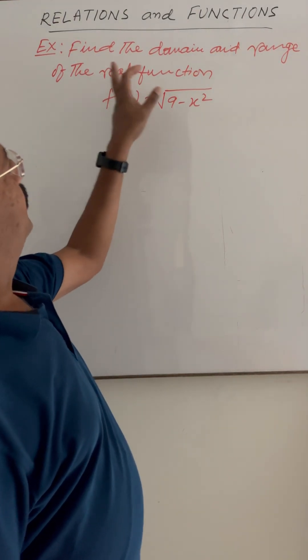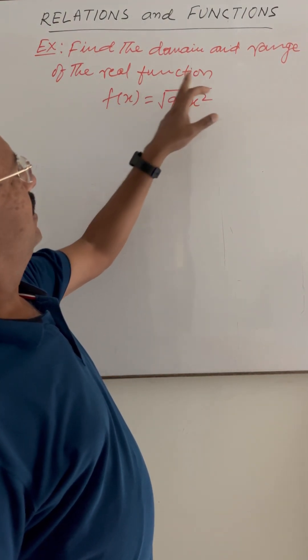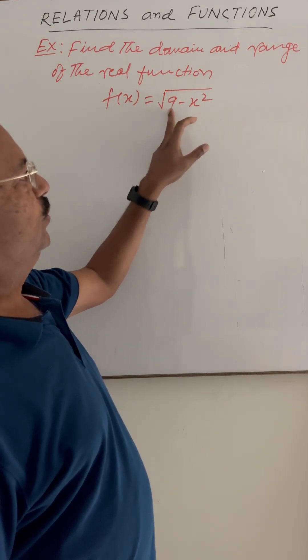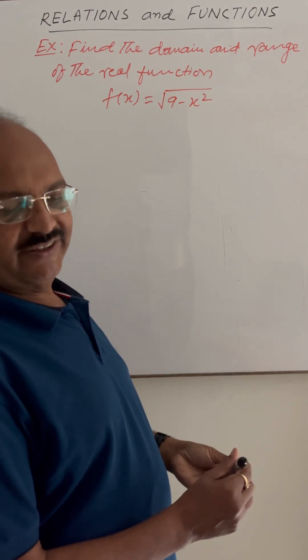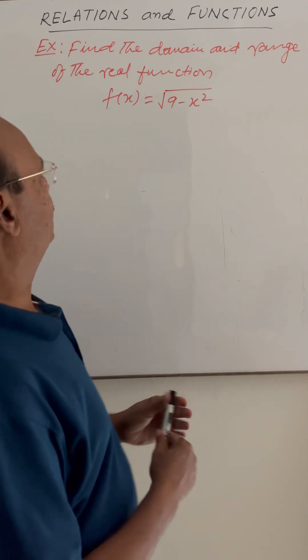Here the question is find the domain and range of the real function f(x) is equal to the square root of 9 minus x². So let us see the solution here.